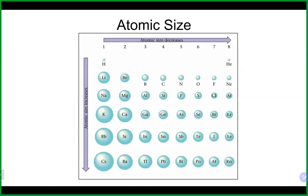Another really important trend is atomic size. What we see is that the atom actually gets smaller as you go up and to the right, and gets larger as you go left and down. As you go to the right on the periodic table there are more protons — more positive charge in the center means even the outer electrons are strongly attracted to the center, so the overall atom size decreases.